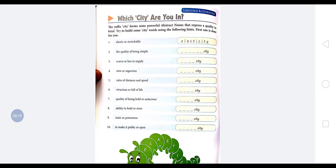Here, the suffix - suffix you know, prefix and suffix. Prefix is the word which is added before the word, and suffix is the word which is added after the word. So here, the suffix 'city' forms some powerful abstract nouns. Abstract nouns, I hope you know - the things which we cannot see, we cannot touch, but only we can feel.